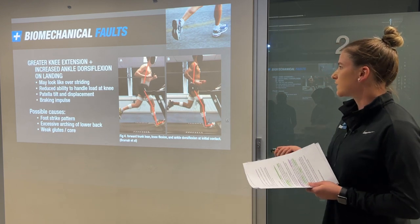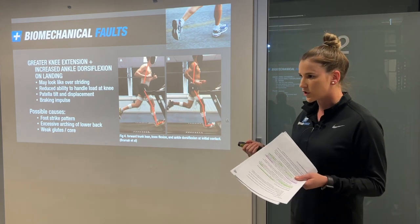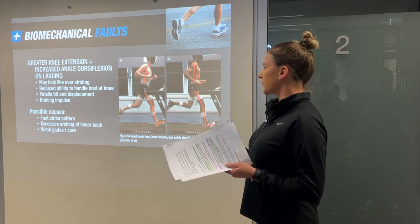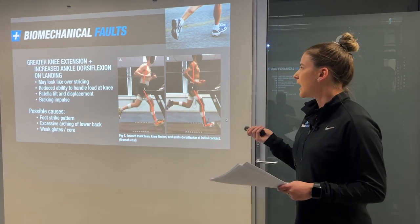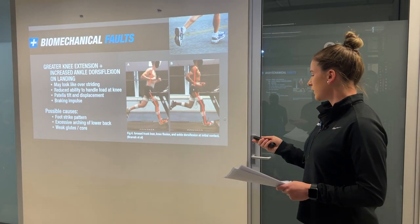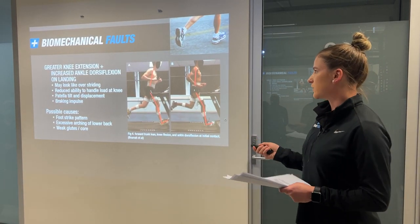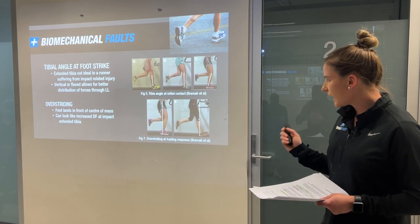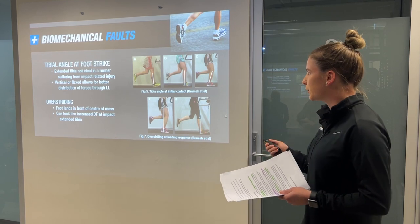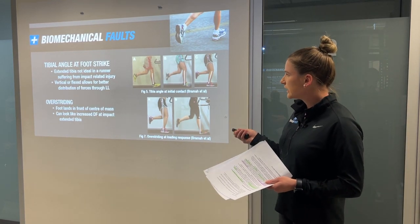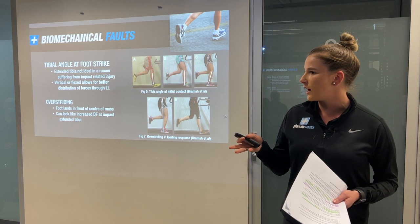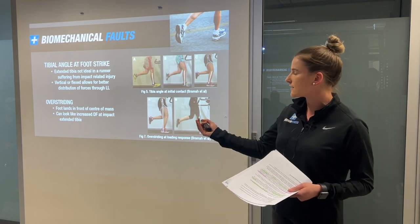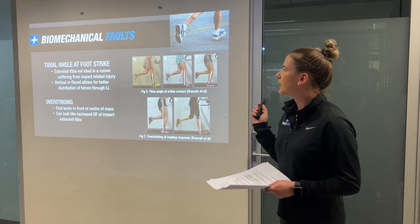Moving on to tibial angle at foot strike — the tibia being your shin. An extended tibia much further in front of the body's centre of mass creates issues with impact. In image A you can see this line is not sitting vertical — the ankle is in front of the knee — and you can start to think about how that affects your ability to absorb forces through the lower limb.